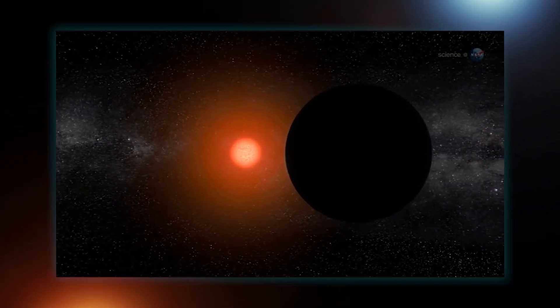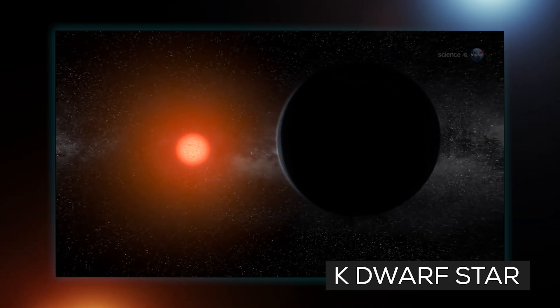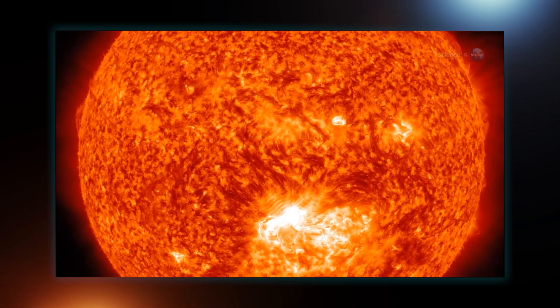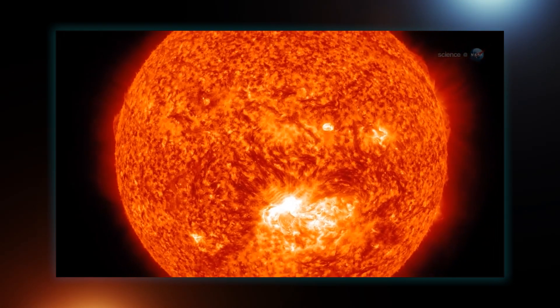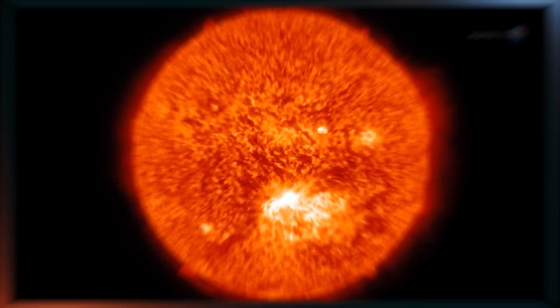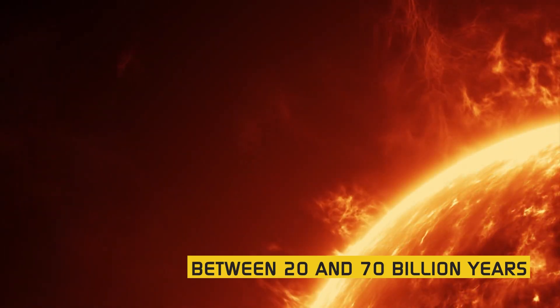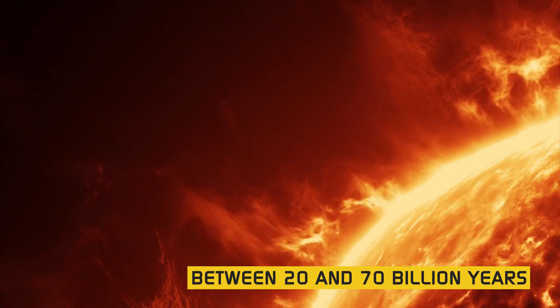According to those parameters, the perfect super-habitable planet would orbit around a K dwarf star, a relatively small star that's slightly cooler than our sun. K stars are orange-red dwarfs, and though they don't sound as ideal for life as our sun, they do have one significant advantage. Their lifetimes are anywhere between 20 and 70 billion years.